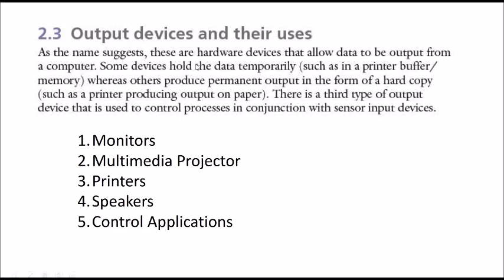What is the output device? It can be described as hardware devices that allow data to be output from the computer. Any device that can show the output or the data from the computer is an output device. These devices can hold the data in a temporary way, permanently, or in a controlled way.